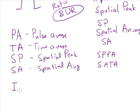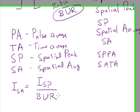Turns out the spatial average intensity is equal to the peak, is related to the peak intensity, the spatial peak intensity, by dividing by the beam uniformity ratio.